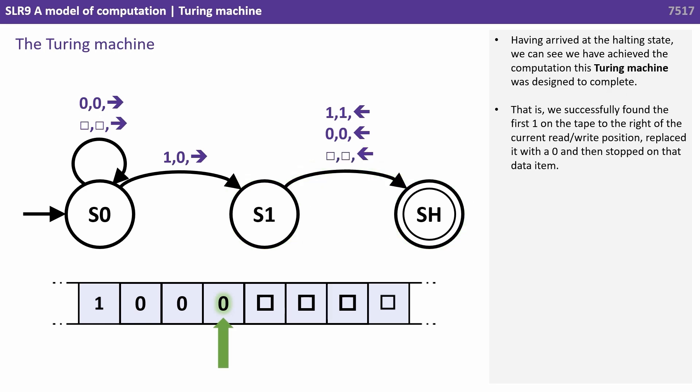Having arrived at the halting state, we can see we've achieved the computation this Turing machine was designed to complete. That is, we successfully found the first 1 on the tape to the right of the current read-write position, replaced it with a 0, and then stopped on that data item.